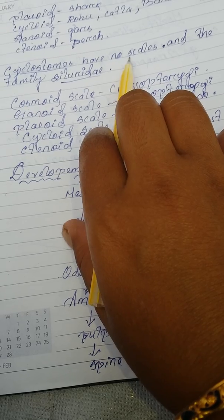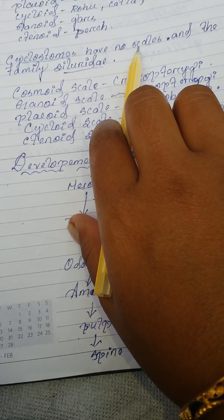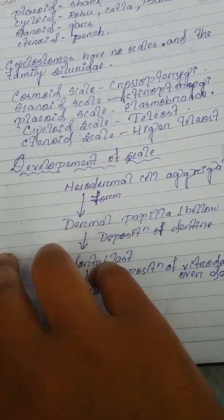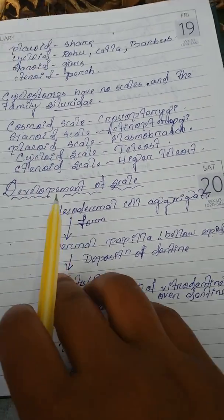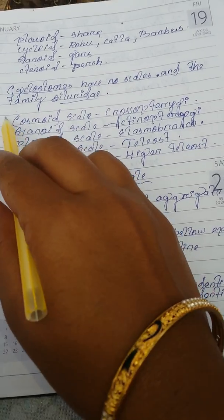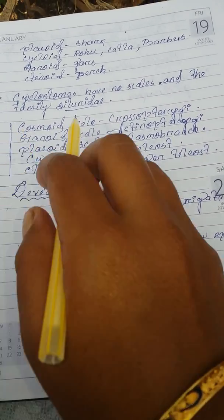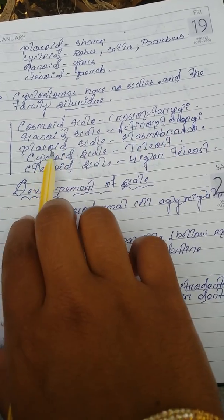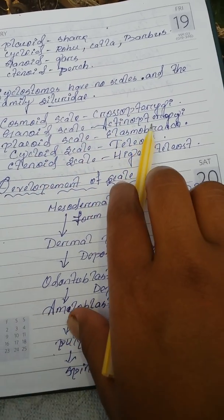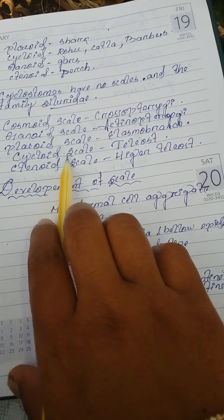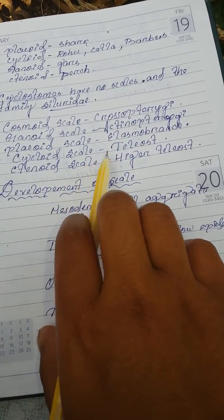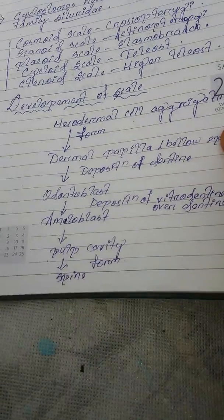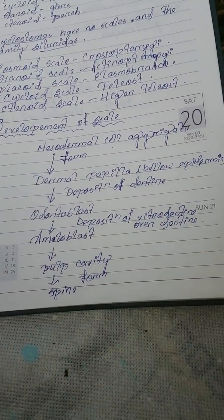Cyclostomes and the family Siluridae have only skin with no scales. Cosmoid scales are found in crossopterygii. Ganoid scales are found in actinopterygii. Placoid scales are found in elasmobranchs. Cycloid scales are found in teleosts. Tinoid scales are found in higher teleosts.